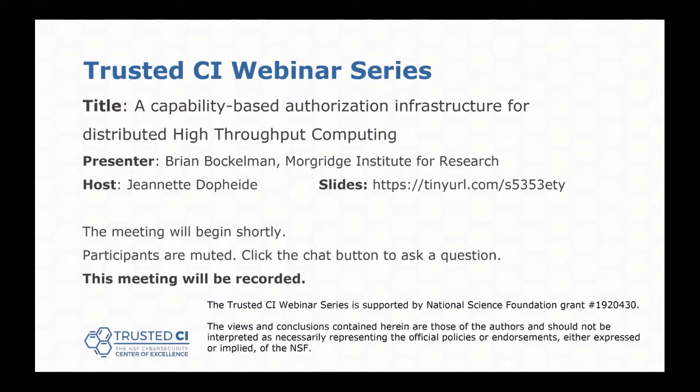Today's topic is a capability-based authorization infrastructure for distributed high-throughput computing. Our presenter is Brian Backelman. Brian is a principal investigator at Morgridge Institute for Research and a co-PI on the Partnership to Advance Throughput Computing, also known as PATH, and the Institute for Research and Innovation in Software for High-Energy Physics. Within the OSG, the Open Science Grid, he leads the technology area, which provides the software and technologies that underpin OSG's fabric of services.